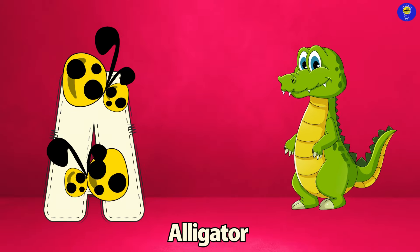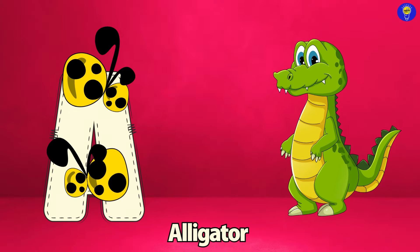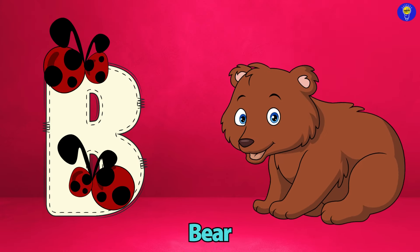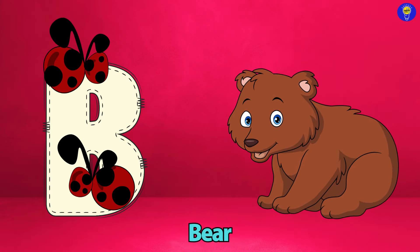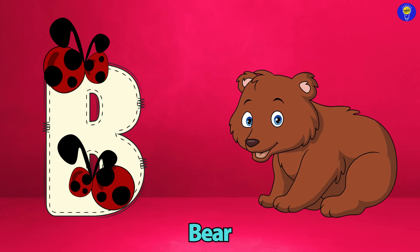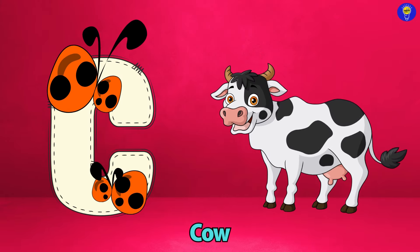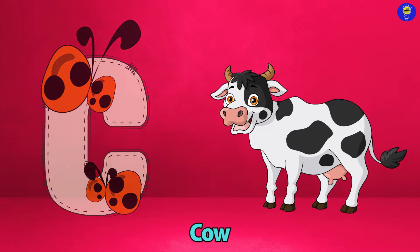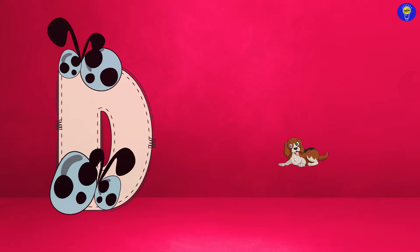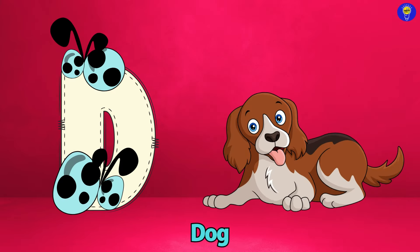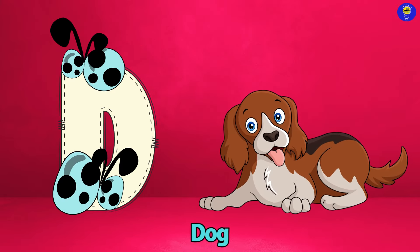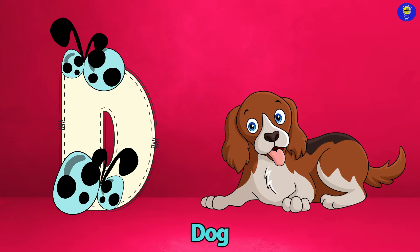A is for Alligator. A, A. Alligator. B is for Bear. B, B. Bear. C is for Cow. C, C. Cow. D is for Dog. D, D. Dog.